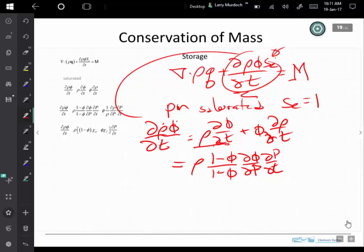So this term here becomes what I just wrote. The derivative is now like that with the chain rule. And this is just one minus the porosity, and I can just stick that in there.